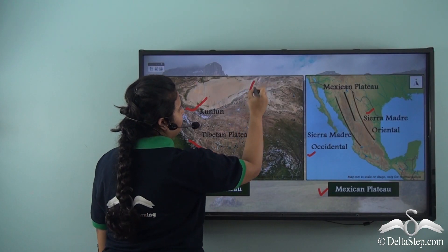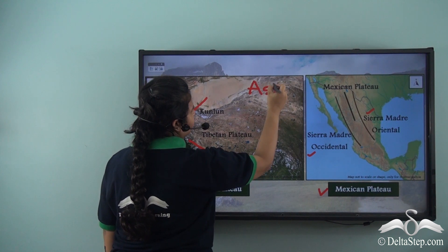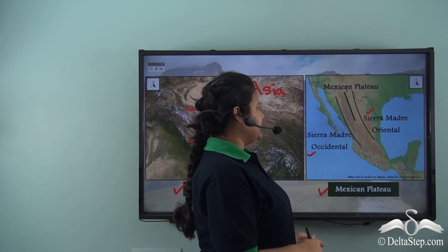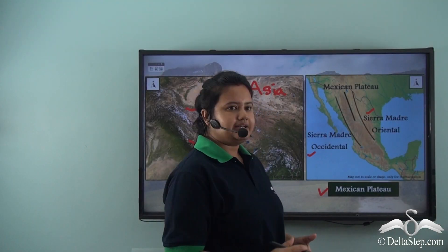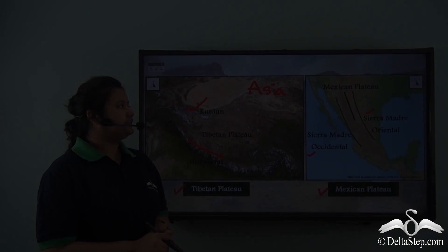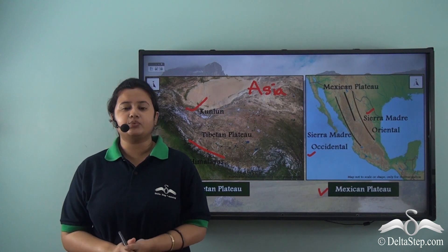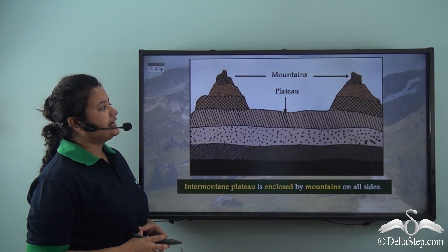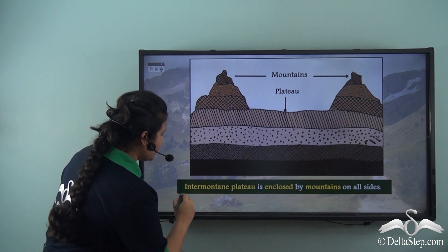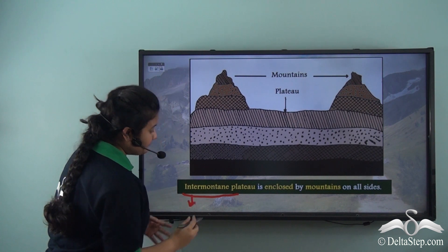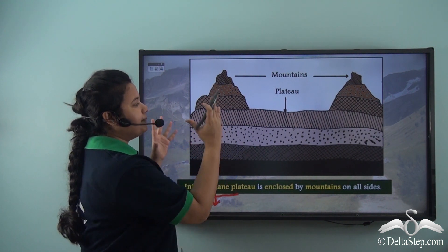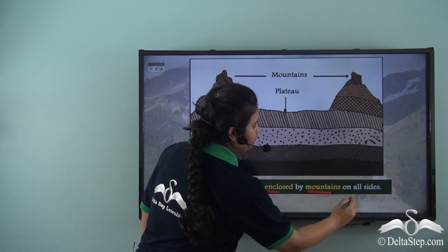This map shows a part of Asia, where the Tibetan Plateau, Kunlun mountain range, and Himalayan mountain range are located. The second map shows a part of North America, where the Mexican Plateau, Sierra Madre Oriental, and Occidental are located. The plateaus situated between mountain ranges are called Inter-Mountain Plateaus. 'Inter' means placed in between and 'mountain' means mountain, so Inter-Mountain suggests a plateau which is enclosed by mountains on all sides.